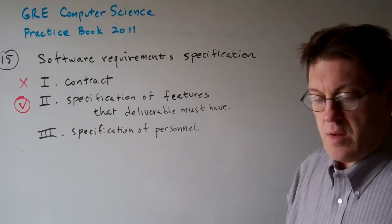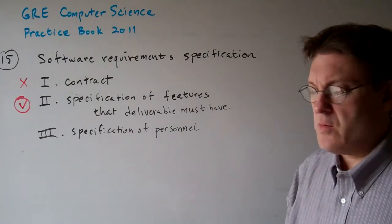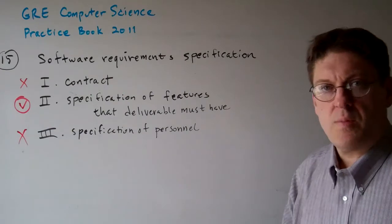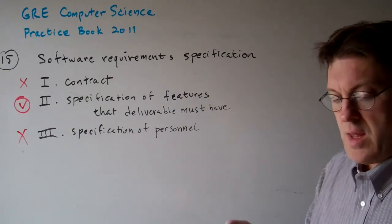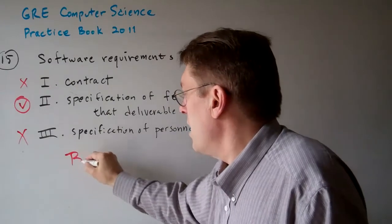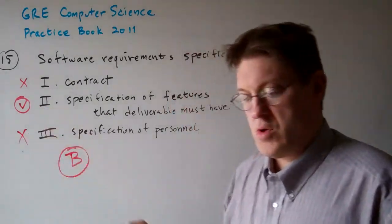3. A specification of the personnel and resources. It doesn't have anything to do with the people. The requirements don't have to do with the people. It's just about the software. So, the answer to question 15 is B, 2 only.